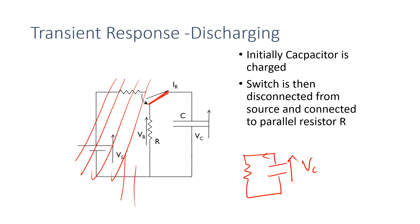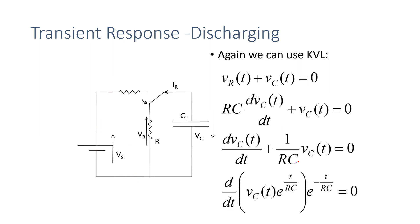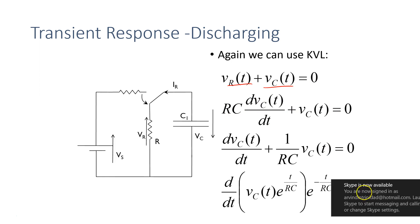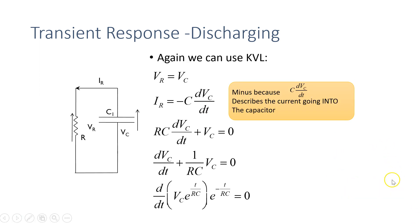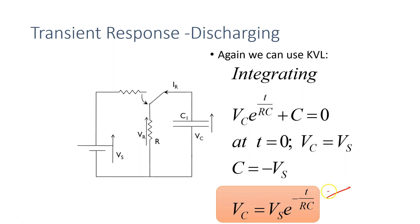For discharging, we go through the same process. We write the KVL equation — in this case there's no voltage source, so it's just the voltage across the resistor plus the voltage across the capacitor equals zero. We do the substitution with I = C·dV/dt, solve the differential equation, and we end up with the discharging equation: Vc = Vs·e^(−t/RC).